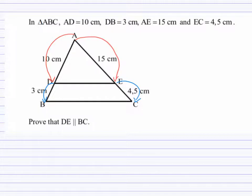Let us begin by working out what AD divided by DB is equal to. This is the first side we're going to look at, and we want to see what that ratio is. So AD is 10 cm, DB is 3 cm. This is our first ratio.